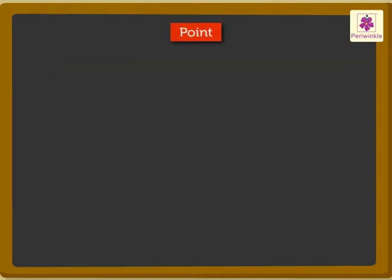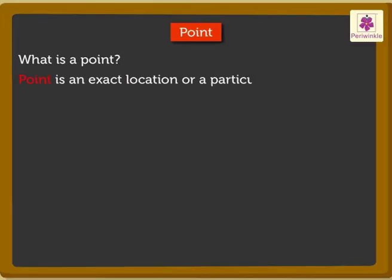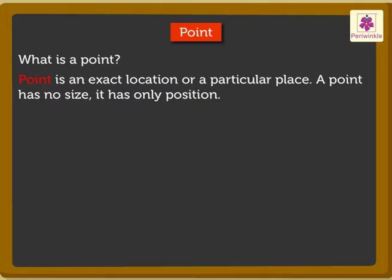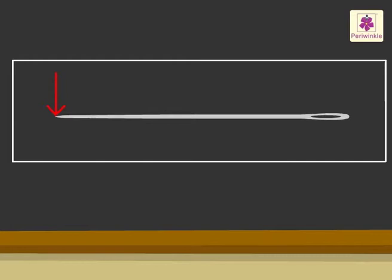What is a point? A point is an exact location or a particular place. A point has no size — it has only position. We denote the position of a point with a dot. Here, P is a point. We read it as point P. The tip of a needle is an example of a point.